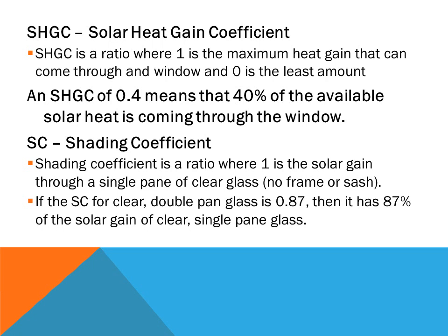The Shading Coefficient, abbreviated SC, is a ratio where one is the solar gain through a single pane of glass, not including the frames or sashes. For example, if the shading coefficient for a clear double pane glass is 0.87, then it has 87% of solar gain through that type of glass.